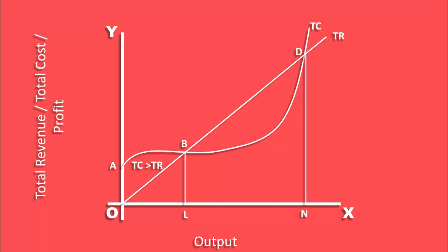Similarly, when ON output is produced, total cost is equal to total revenue. Total cost is ND. Total revenue is also ND.